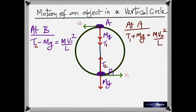Tension at the lowest point is T1 and at the highest point is T2. Those are the two equations we get when we consider the motion of an object in a vertical circle. Thank you.